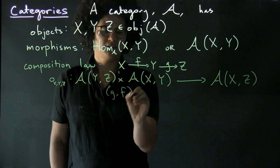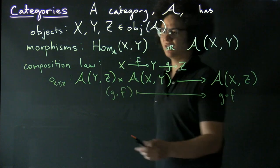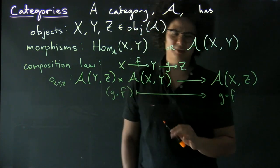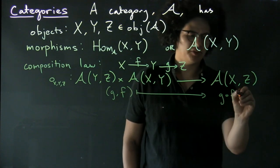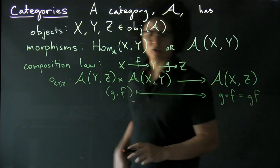and it takes it to G composed with F. Now note that I've left out the triple here that basically never gets used, and in fact I'm generally just going to write this as G, F and leave out the composition symbol.